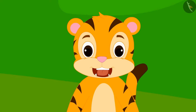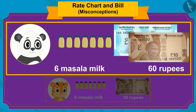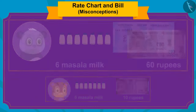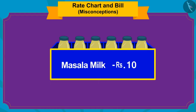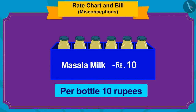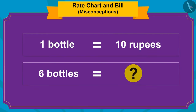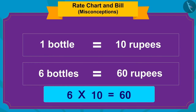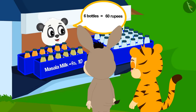Sher Khan was shocked to hear this. Children, can you tell who is correct between the two? Yes, Golu is right. Even though there were six bottles of spiced milk on the tray, the price written was the price per bottle. So if the price of one bottle is rupees 10, the price of six bottles will be 6 multiplied by 10, which equals 60 rupees. Golu explained this to Sher Khan, and Sher Khan understood it.